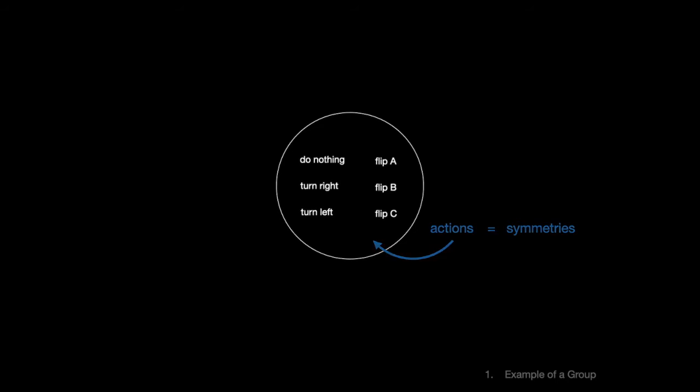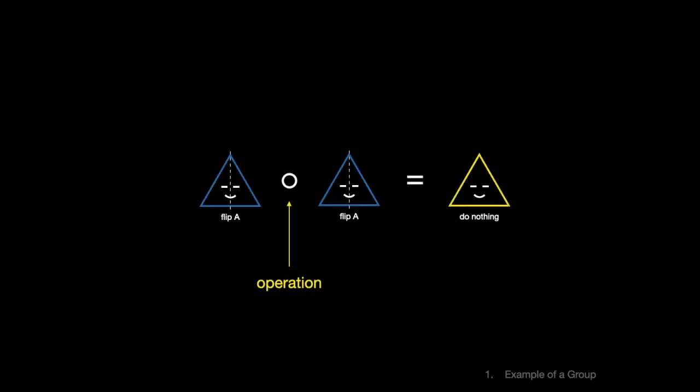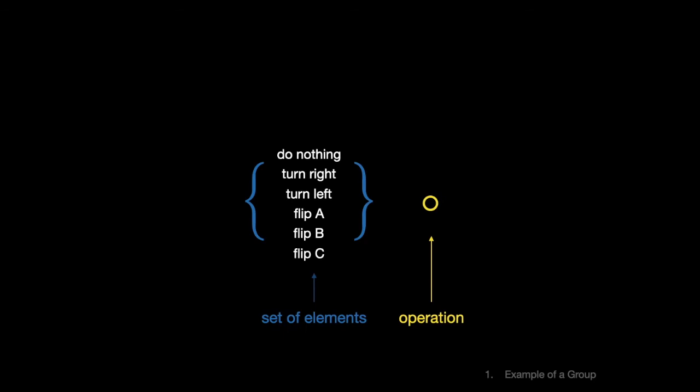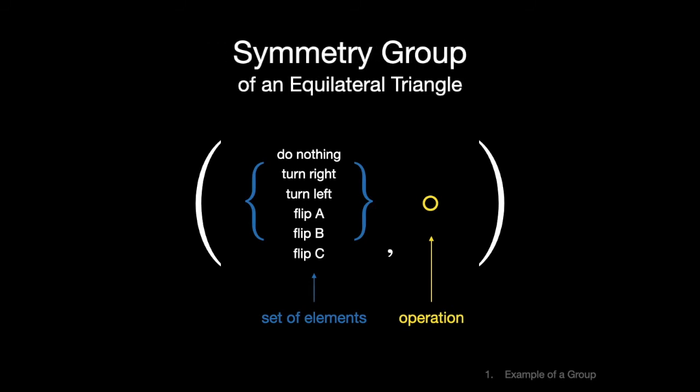In addition to a set of elements, a group also needs an instruction of what kind of operation to use when combining those elements. In this case, our operation is composition, which we just saw. It's the act of performing two actions in a row. Together, this set of elements and this operation make up our first example of a group. It's a group of symmetries, specifically the symmetries of an equilateral triangle. You can also call it the symmetry group of an equilateral triangle. Keep this group in mind, because it will be our reference as we talk about groups in general.